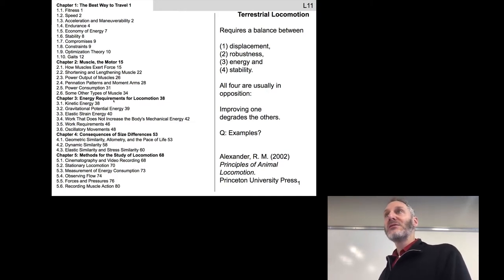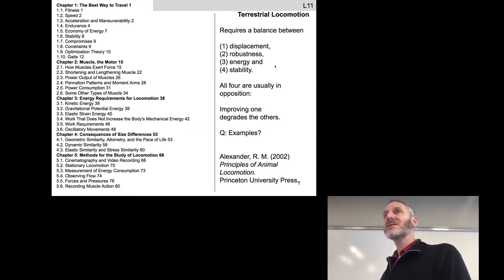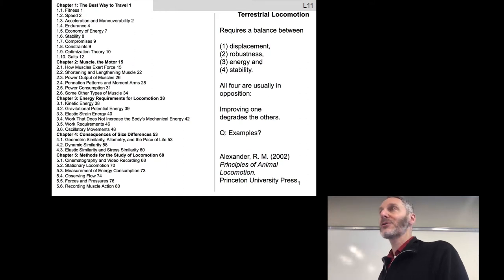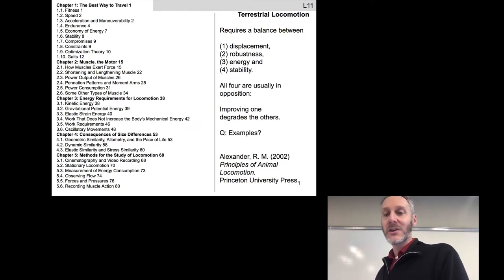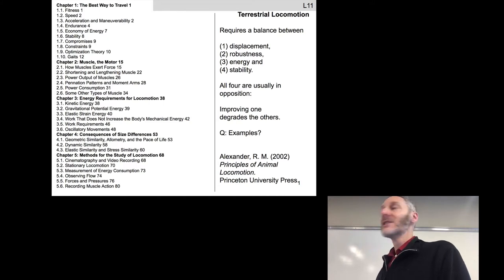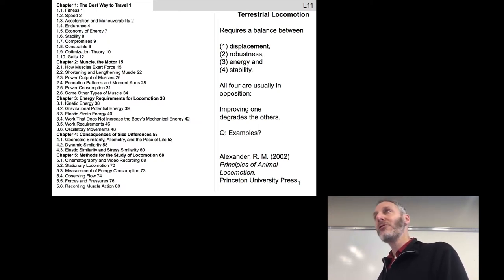One of the reasons locomotion is difficult is that you are constantly striking a balance between at least four antagonistic phenomena. Displacement — you want to move as far as possible, but at the cost of the other three. Robustness is the ability to move through different environments. If you can only locomote across perfectly flat ground, your room to maneuver is narrow. You also have to reckon with energy — the faster you move, the more energy you use. And finally, for most organisms and machines, you also need to keep upright as you move.